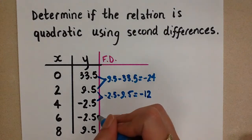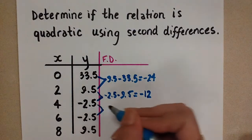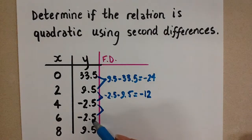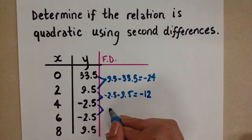Okay? And we proceed in the same way. When we subtract negative 2.5 minus negative 2.5, we're going to get zero.